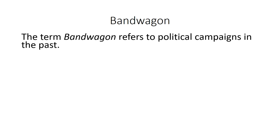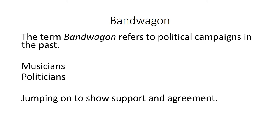Now the term bandwagon, the other name for this fallacy — where does it come from? It refers to political campaigns in the past, in the 1700s and 1800s. Politicians would go through cities riding on a bandwagon with musicians. As they were campaigning, they would tell people to get on the bandwagon to show their support and agreement, making a kind of show. So they would say, 'See, everyone is following me, everyone's going to vote for me — you should vote for me too.' It was really appealing to all the people. And now this term refers to the fallacy, as opposed to ad populum, but they both refer to the same thing.